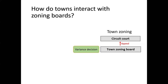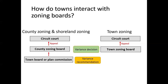A note for town members: if you are in a town with your own zoning, your town zoning board makes the final decision on variances, and those decisions can be appealed to circuit court. If you're under county zoning — which is really a shared county-town zoning — or if it's a shoreline zoning case, the town board or town plan commission would make a recommendation on the variance that would go to the county zoning board, who would make the final decision.